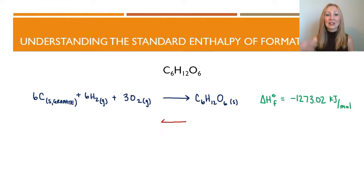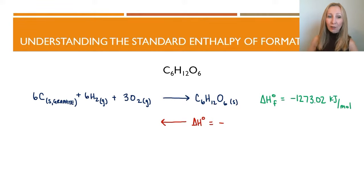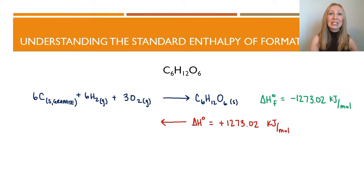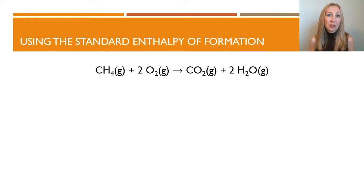The heat of formation of glucose — the heat released when this compound is formed — is negative 1273.02 kilojoules per mole, meaning it's exothermic. If we reverse that reaction, the standard heat for the reverse reaction is positive 1273.02 kilojoules per mole. That means if we take glucose and decompose it into elements in their standard form, it will require 1273.02 kilojoules of heat per mole.